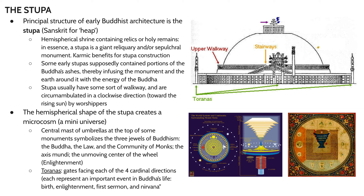The next thing we'll cover pertaining to Buddhist art and architecture is the stupa — the principal structure of early Buddhist architecture. Pretty much all Buddhist architecture we see from this point on references the stupa in some way. Stupas are not a purely Buddhist invention; they existed before Buddhism, but the use of a stupa to contain Buddha's remains popularized their use. The stupa is essentially a hemispherical shrine containing relics or holy remains — in essence, a giant reliquary or sepulchral monument.